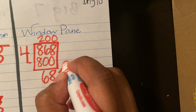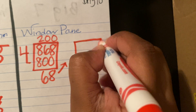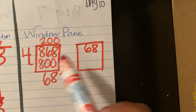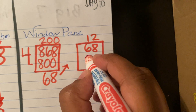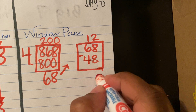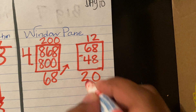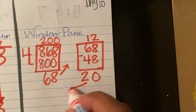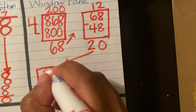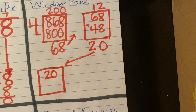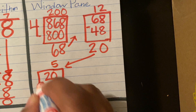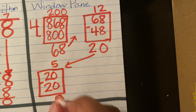I will get 68 — I'm going to make another box. I need to know how close I can get to 68 using four. I know that four times 12 will get me 48. I'm going to subtract that out. Eight minus eight is zero and six minus four is two, so I'm left with 20. I'm going to start another box with 20, and I ask myself: four times what can get me as close to 20 as possible? It's five. Four times five is 20. When I subtract those, I get a zero.